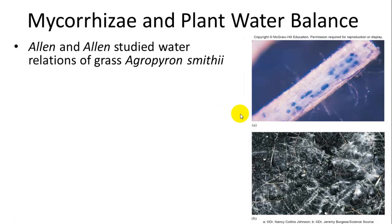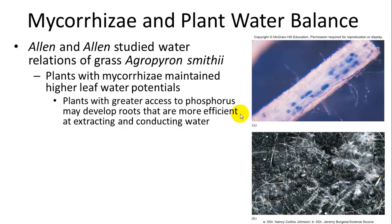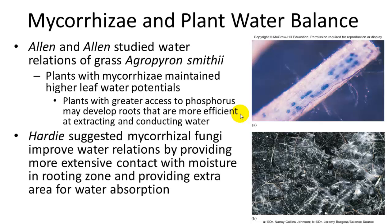Alan studied the relationship between the grass Agropyron and the mycorrhizae within it. Plants with mycorrhizae maintained higher leaf water potential, so they had more access to water. Plants with greater access to phosphorus — also provided by the mycorrhizae — developed roots that were more efficient at extracting and conducting water. Hardy, another scientist, suggested that mycorrhizal fungi improve water relations by providing more extensive contact with moisture in the rooting zone and extra area for water absorption. Both gave evidence for increasing water absorption: one through the effect of phosphorus, the other through extension of the roots.